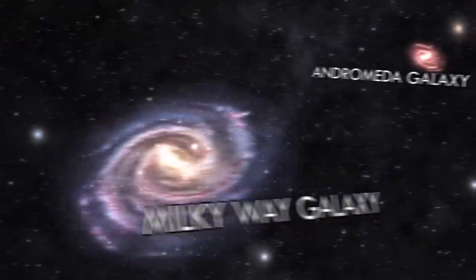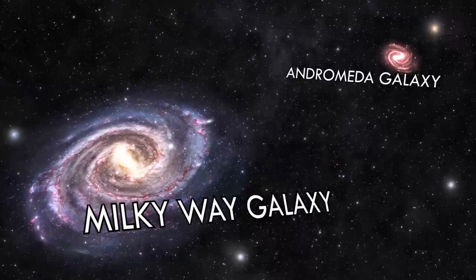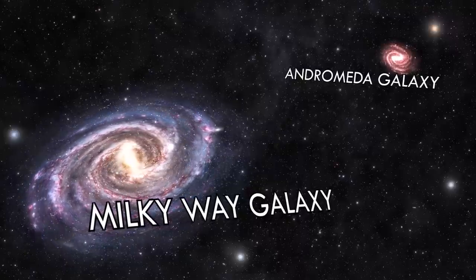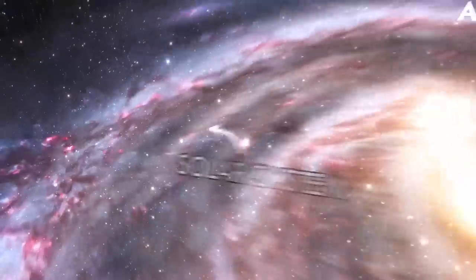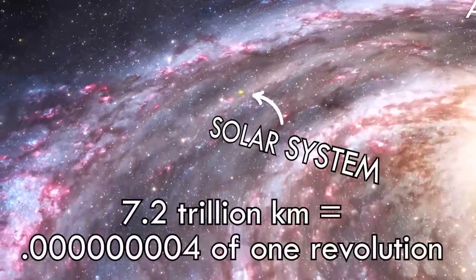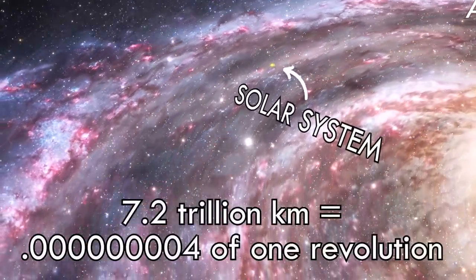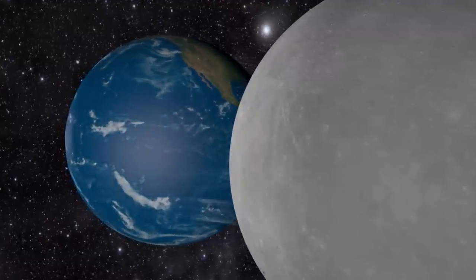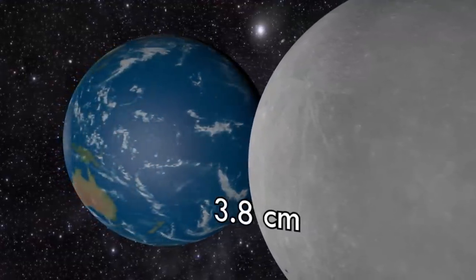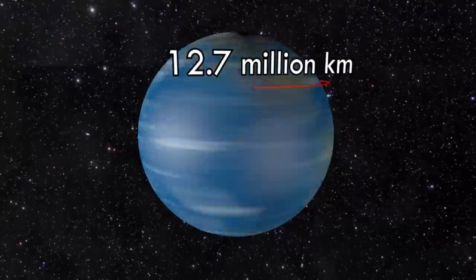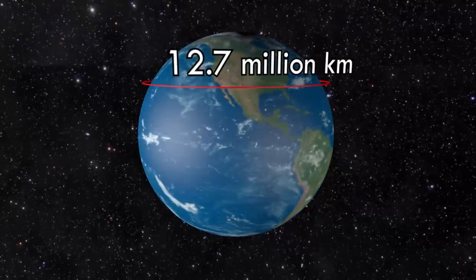And our solar system has traveled 7.2 trillion kilometers around the Milky Way. Closer to home, our moon is now 3.8 centimeters farther away from our revolving Earth, which has spun me around 12.7 million kilometers from here, in my latitude in Austin, Texas.